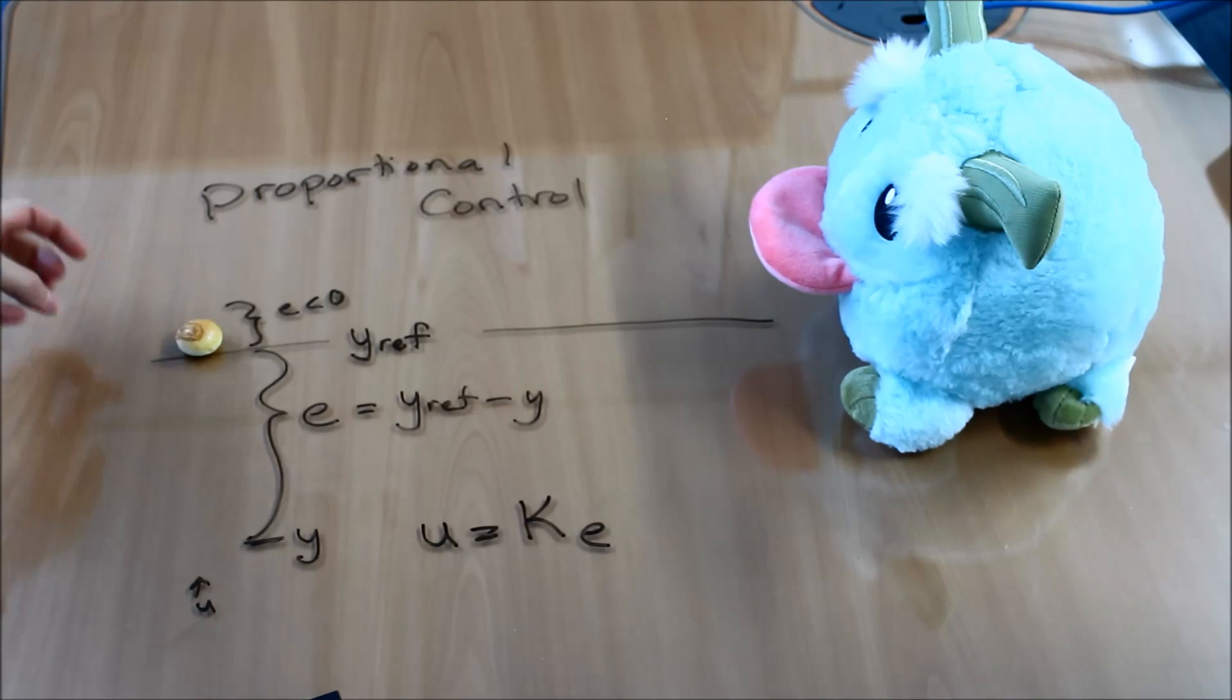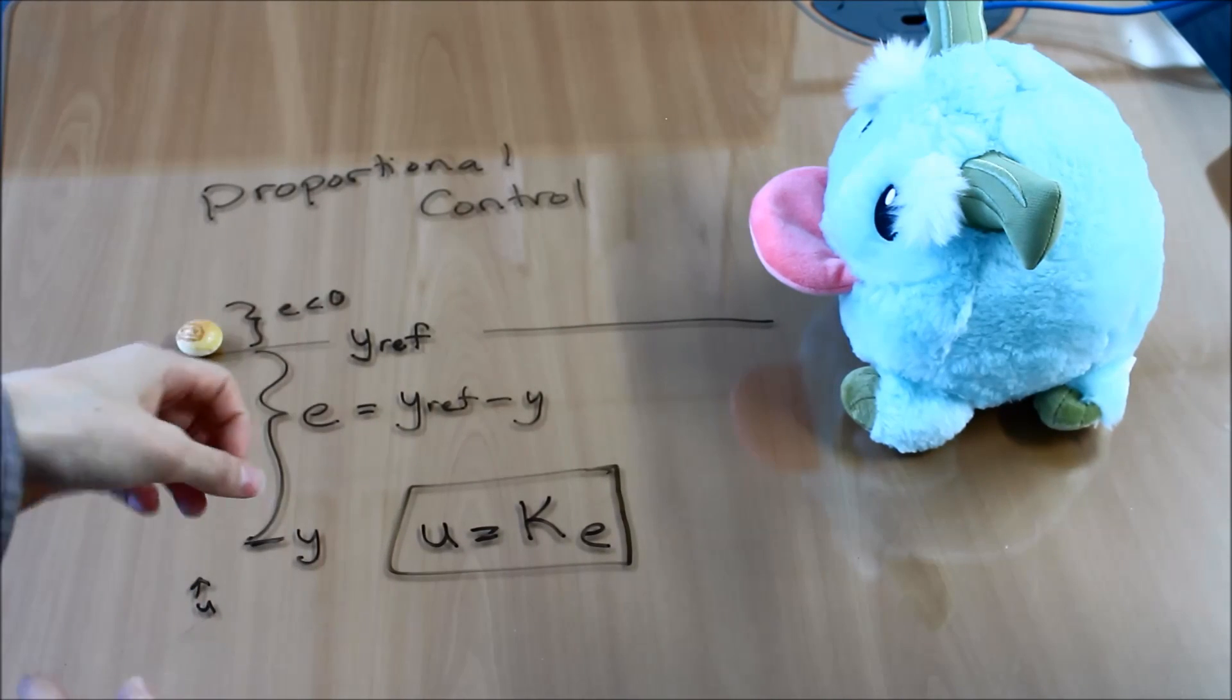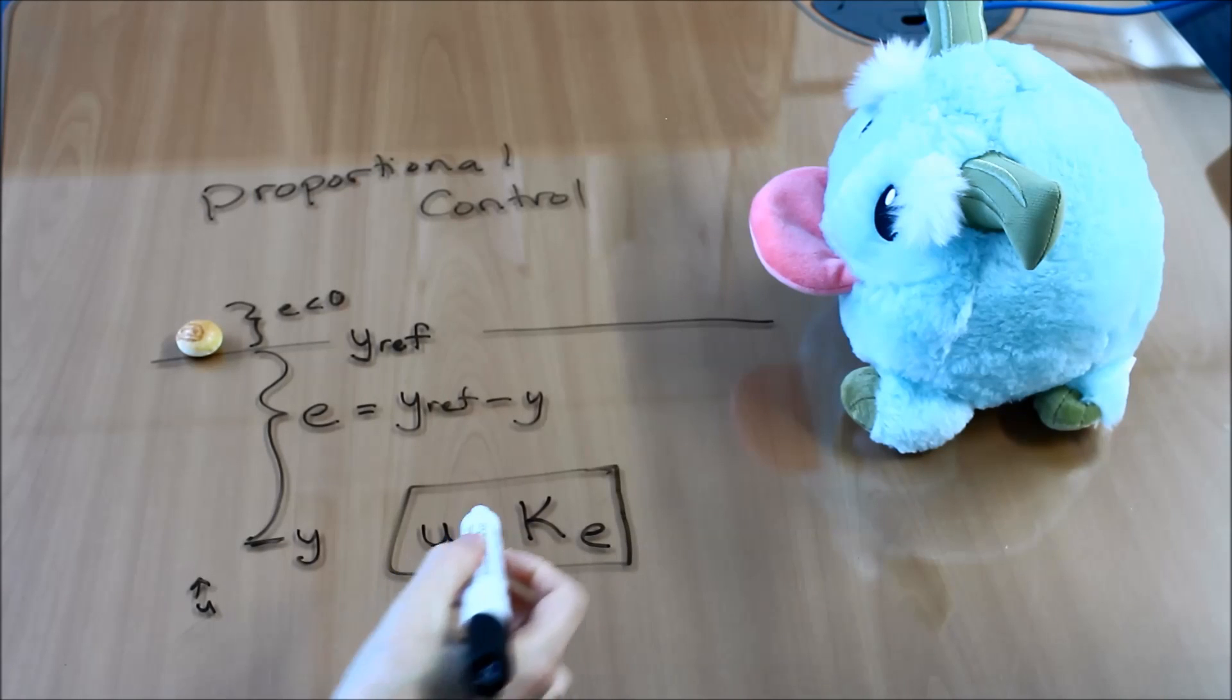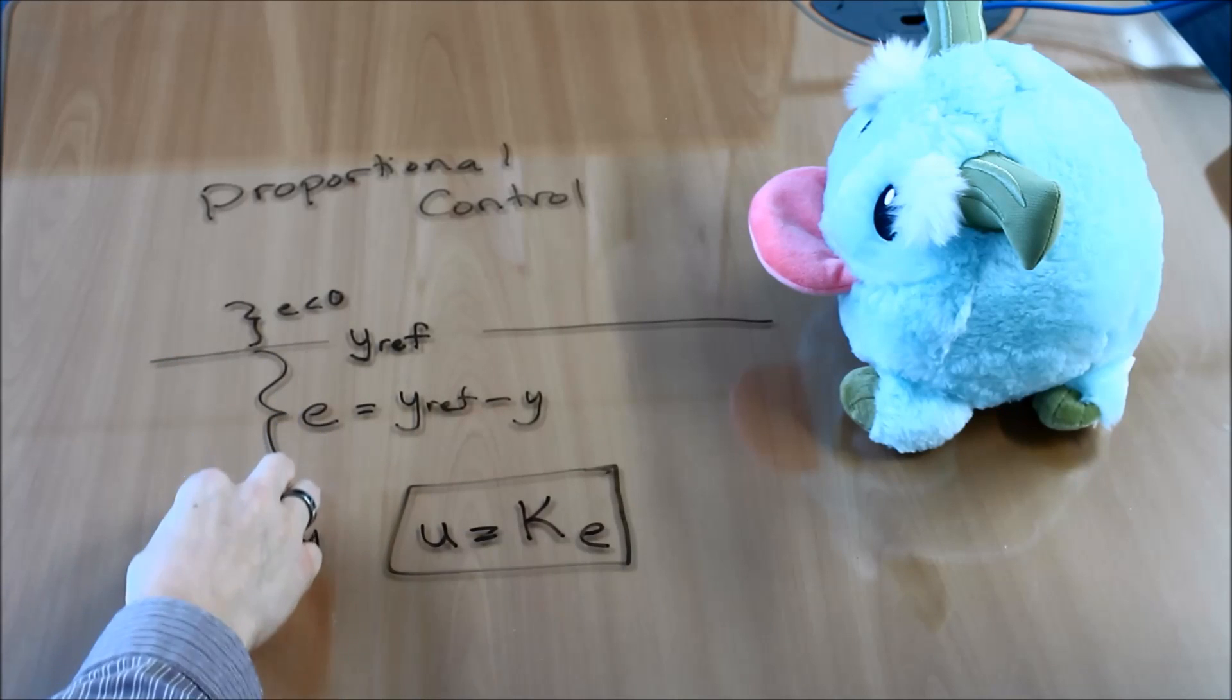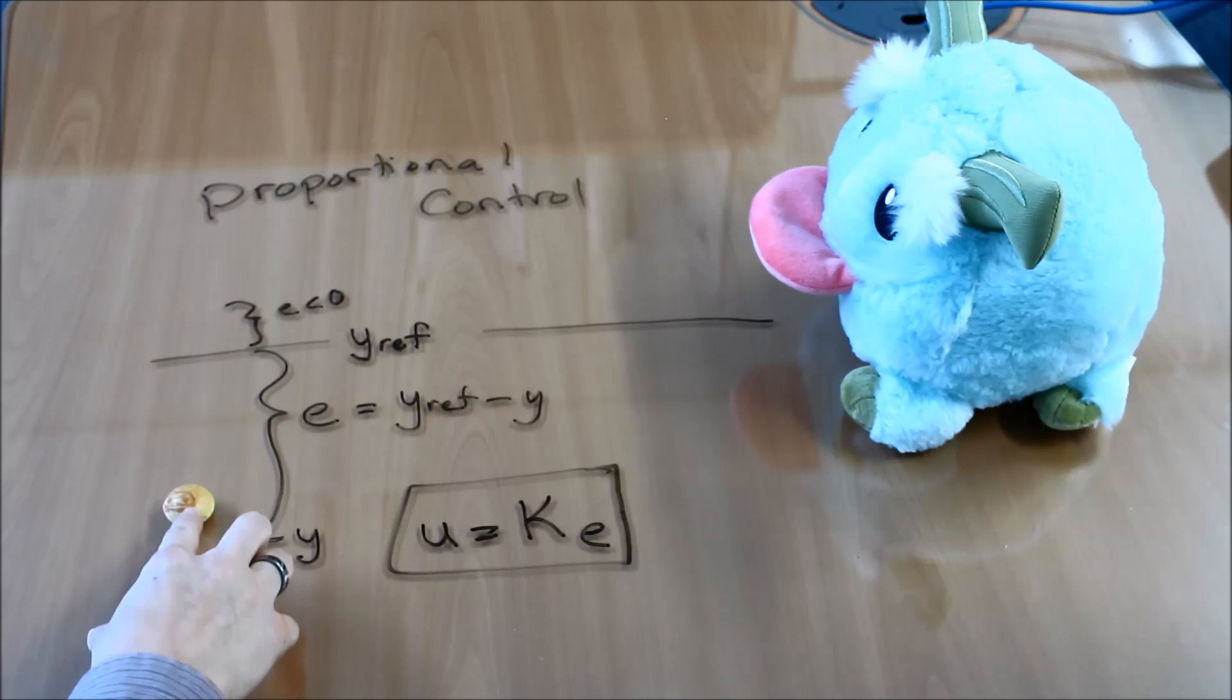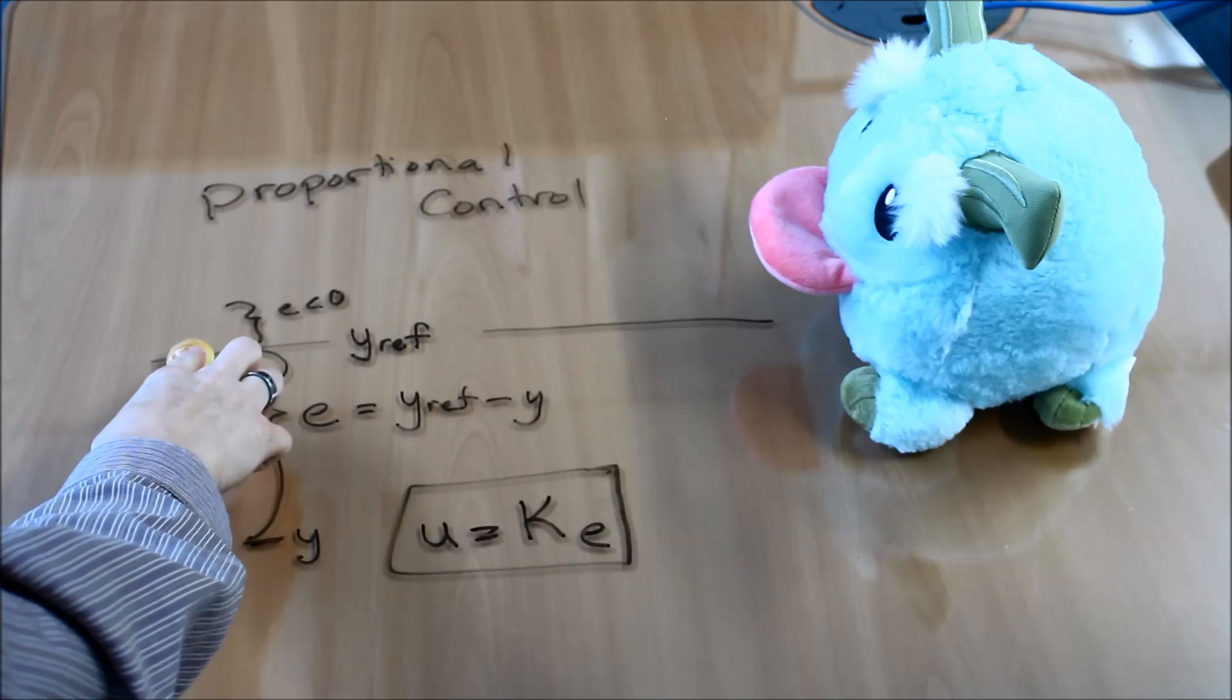So this basic idea for control, called proportional control, works whether you're below or above the reference point. So this is the most basic type of feedback control, just called proportional control. You look at the error, you have some constant, you multiply the error by a constant, and that is the force that you apply to the system. So the idea is that that would help you achieve, move towards your Y reference and achieve your control value.